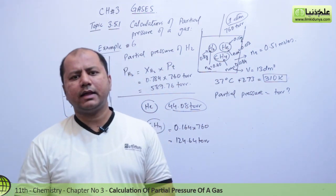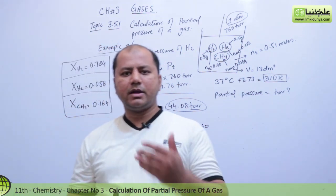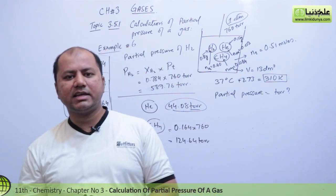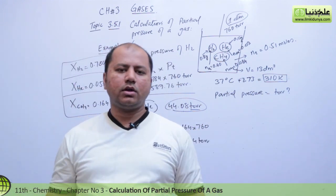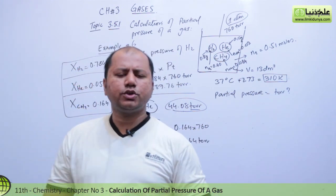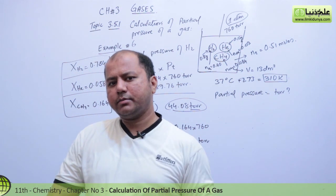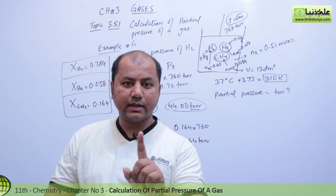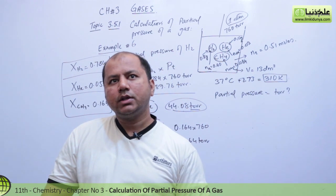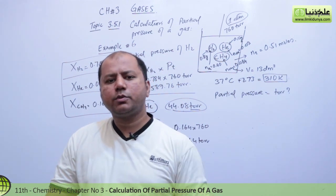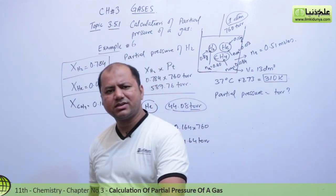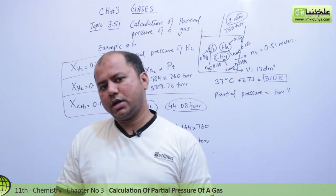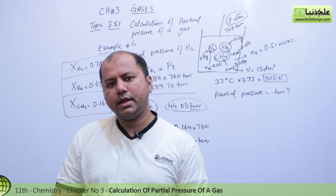As a real-world example, in our atmosphere we have nitrogen, oxygen, and other gases. Among those other gases, carbon dioxide is present at about 0.034%. You could calculate the partial pressure of CO₂ in the same way using its mole fraction.